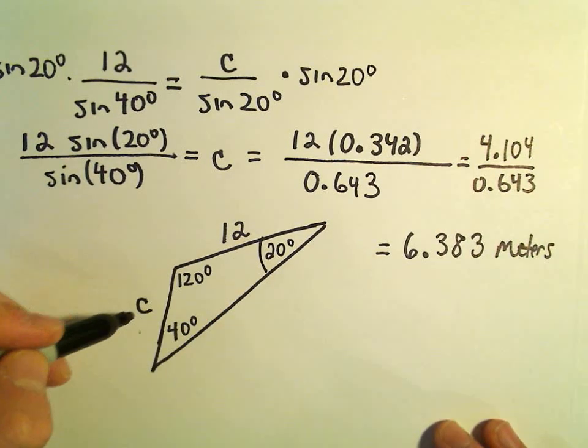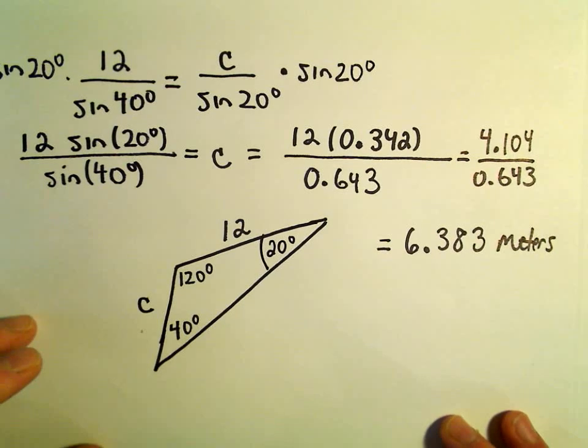the side opposite 20 degrees would have to be significantly smaller. So that agrees with my intuition. That's in the ballpark at least.